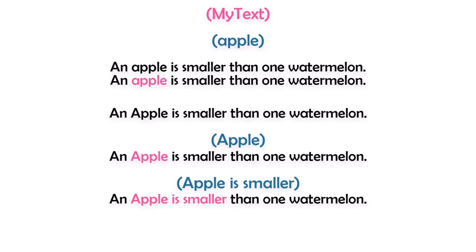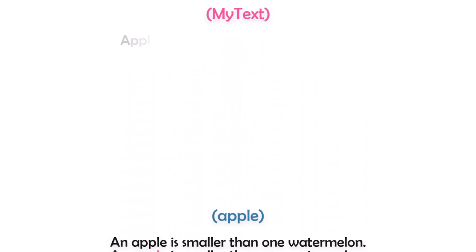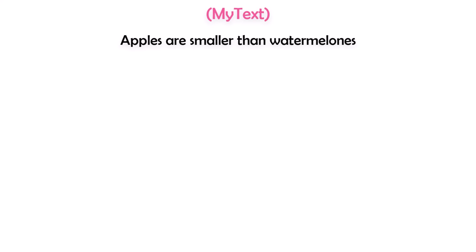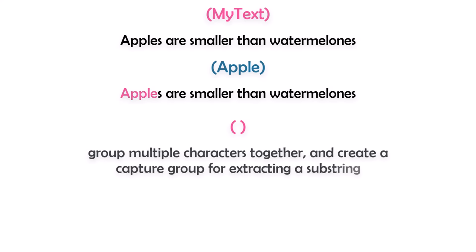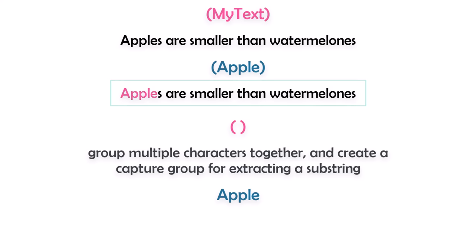I can search for a specific word or sentence inside a large text. If I have the word apple with other letters — for example in plural form — I will also find only 'apple' without the S, meaning the searched text can also be a substring. In summary, these brackets group multiple characters together and create a capture group for extracting a substring. I can also do the exact same thing without using the brackets, so you can use the text you want to search for directly as a pattern.